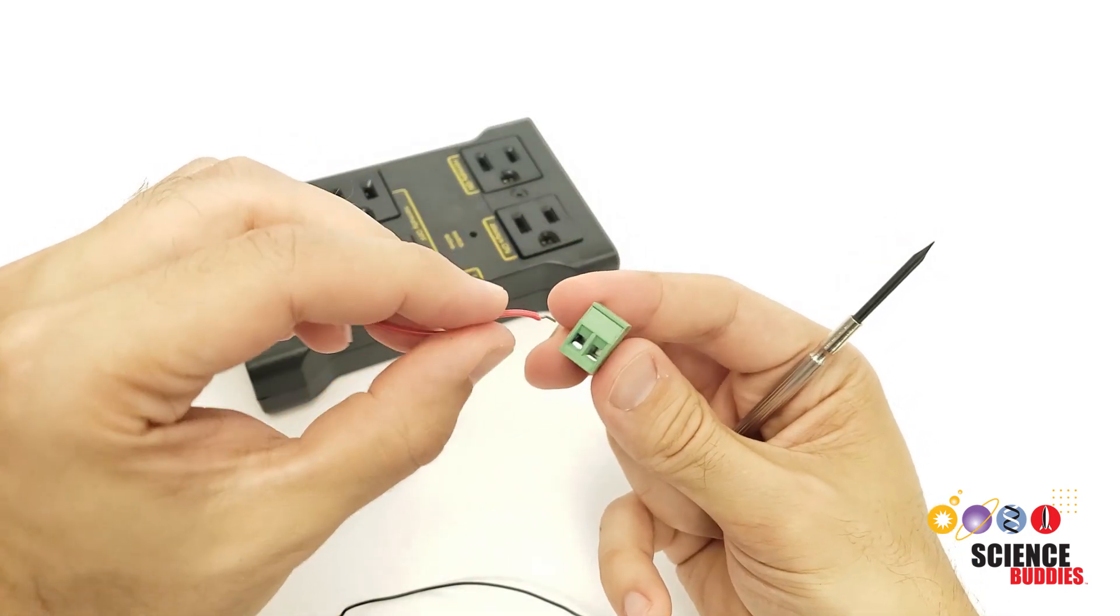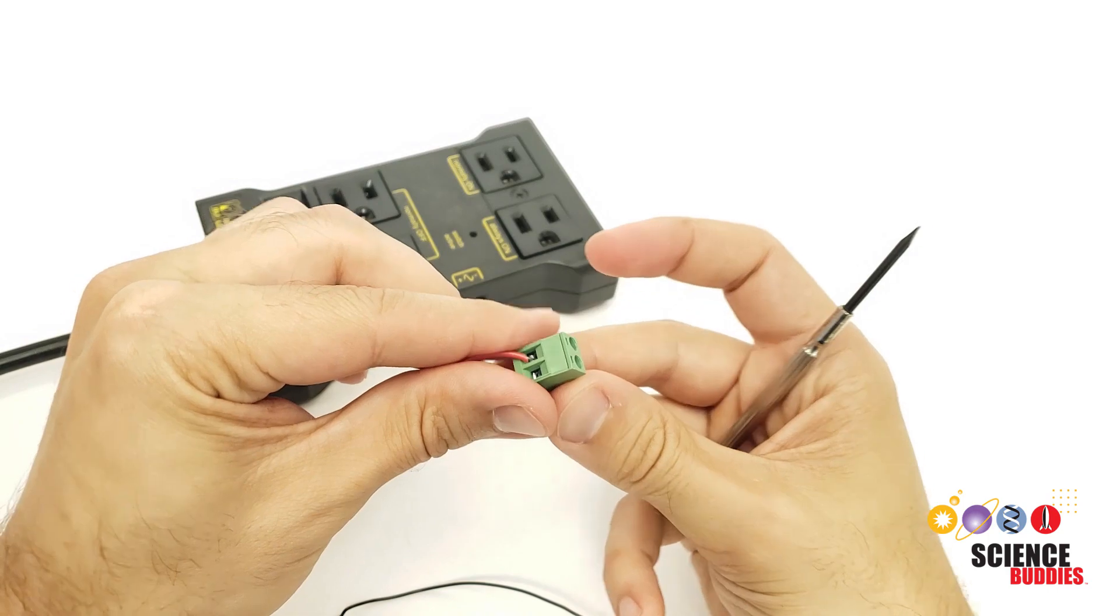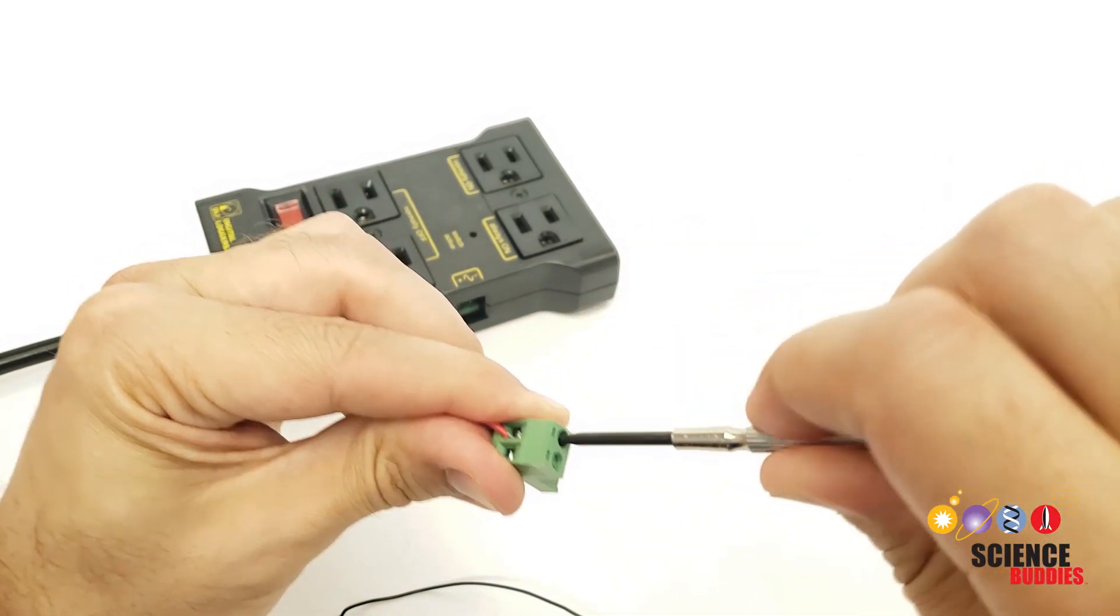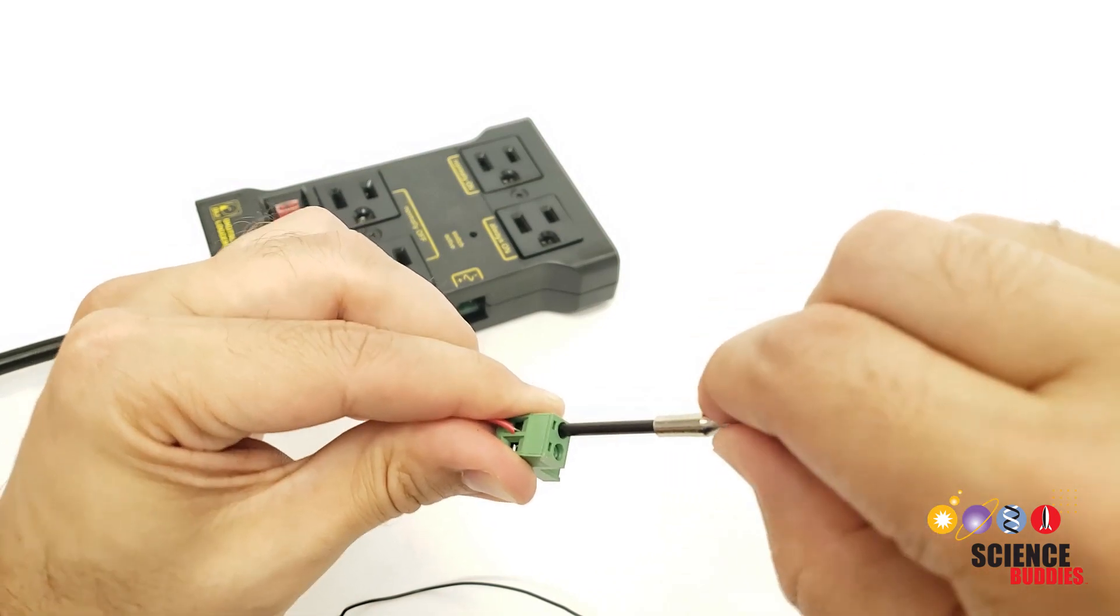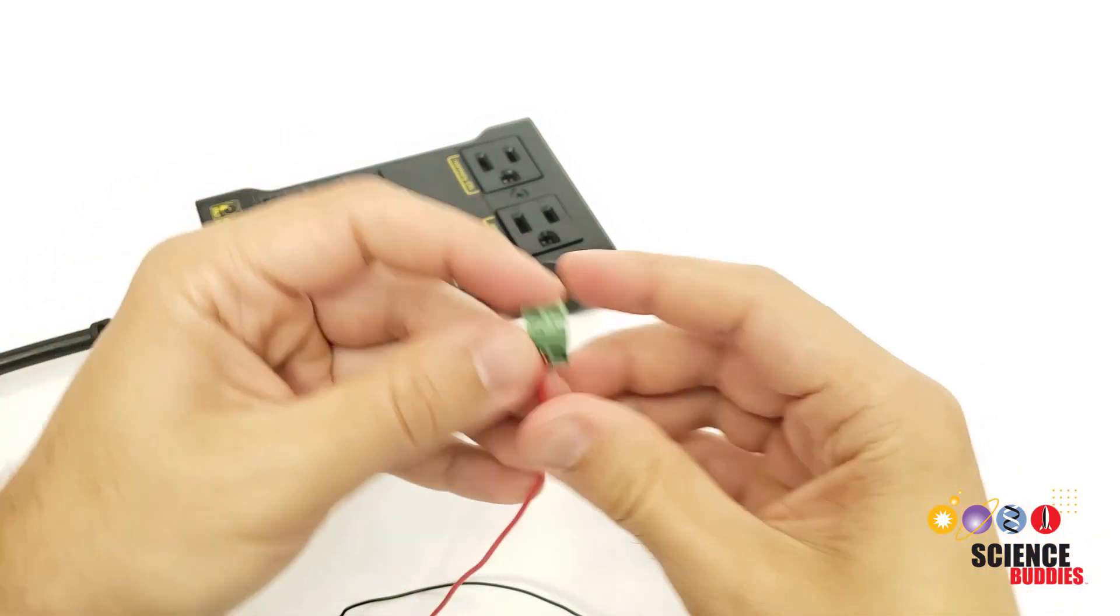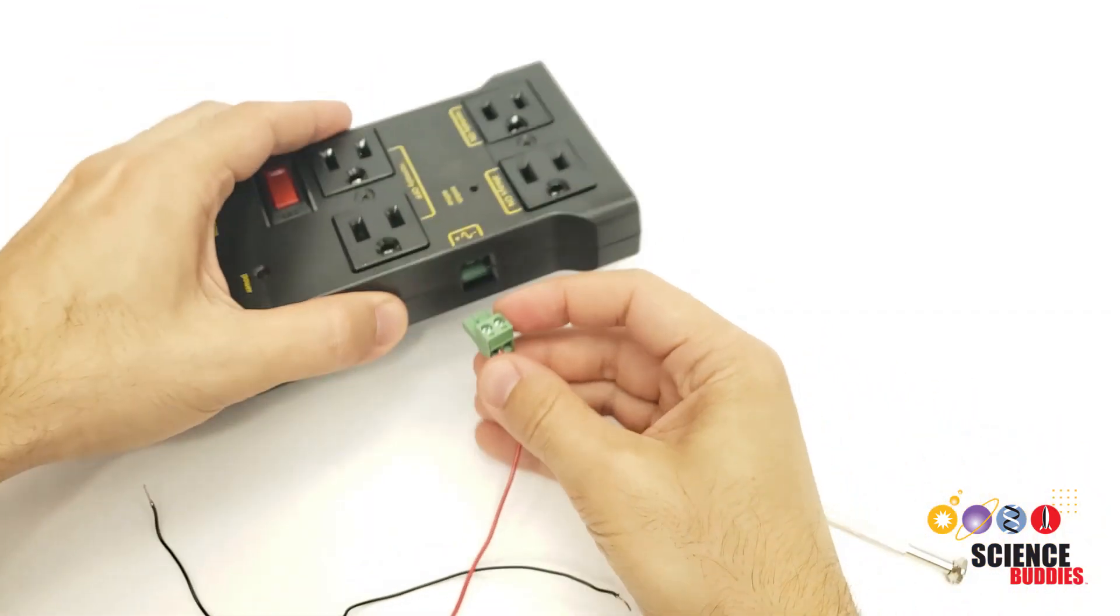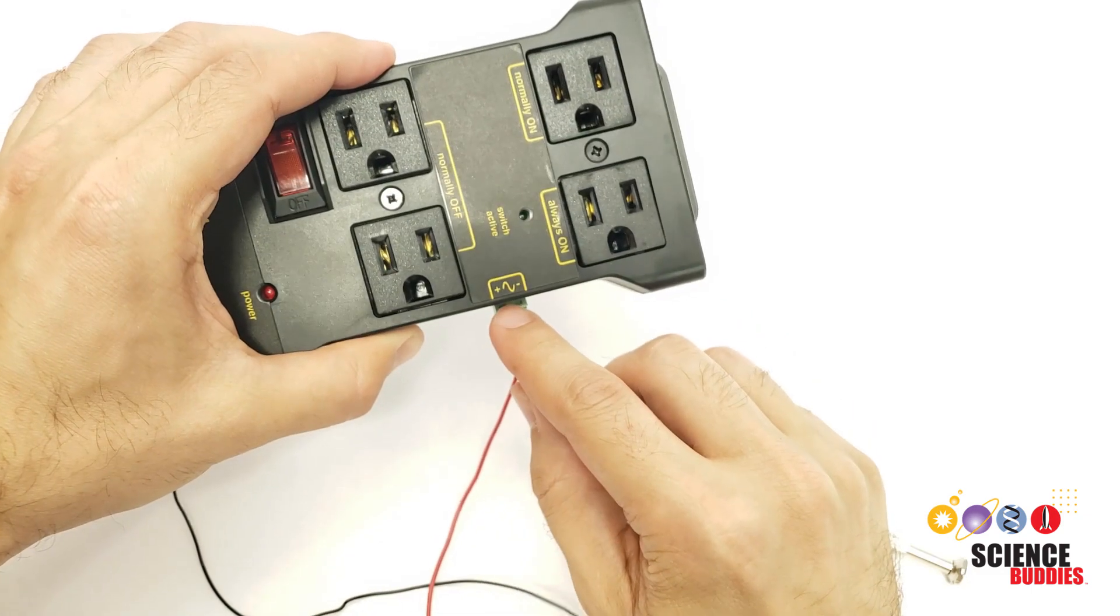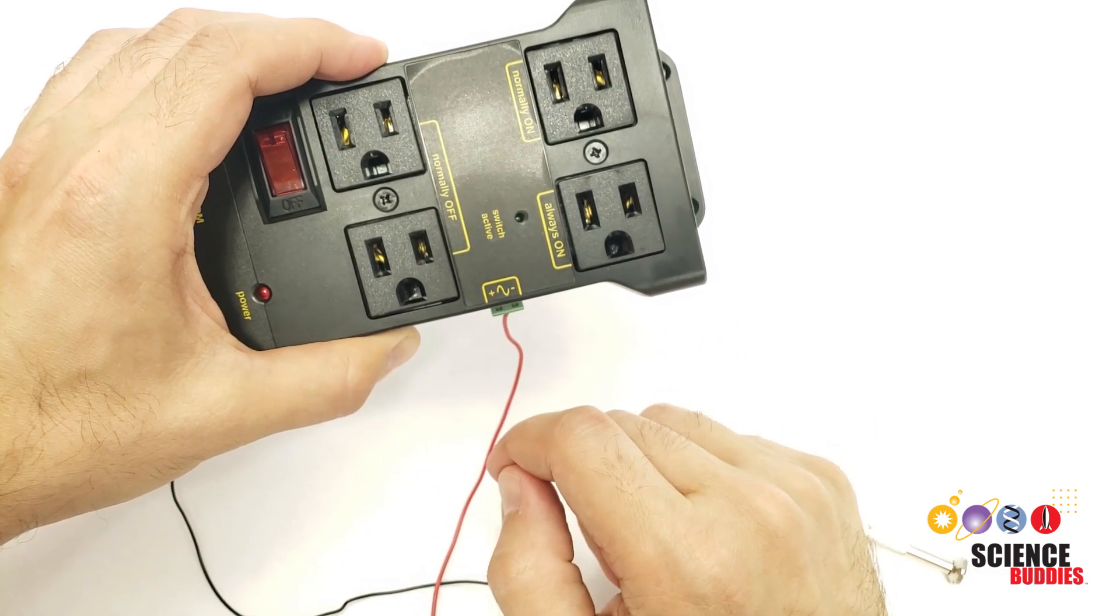To use the screw connector, you simply insert the stripped end of a jumper wire and then use a small flat head screwdriver to tighten the screw until you can feel that the wire is held in place firmly and you cannot easily pull it out. Do that for both wires. Make sure you tighten the screws before you plug it in and then plug the unit into the side. Again, tighten the screws first because you cannot access the screws anymore once it's plugged in.